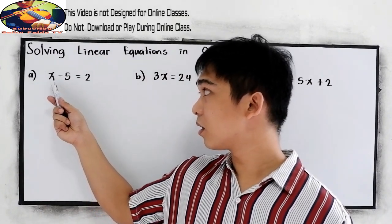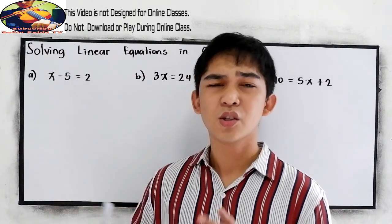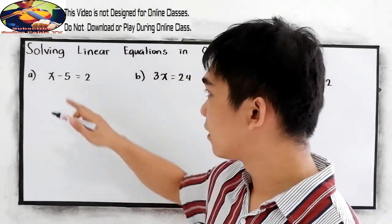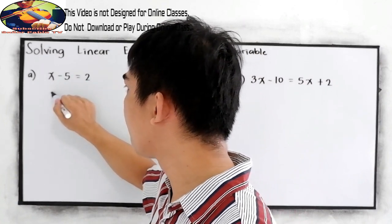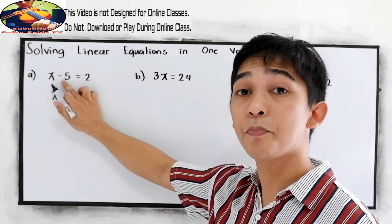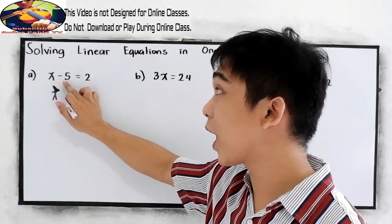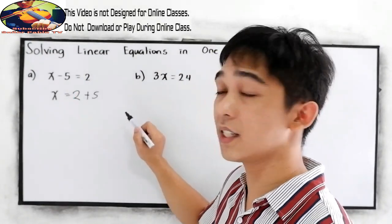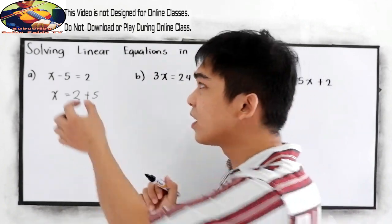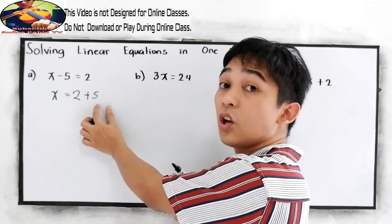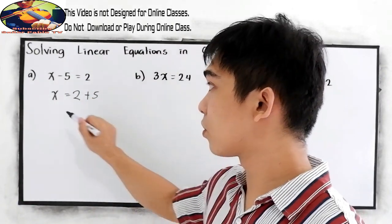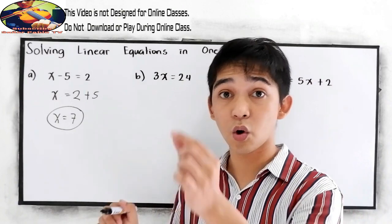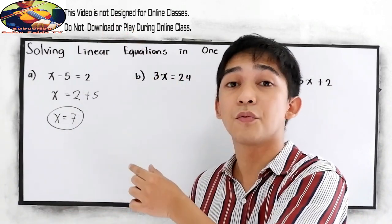First example, letter A: x minus 5 is equal to 2. We're going to find the value for x. If we use the addition property of equality, we add 5 on the left side and also plus 5 on the right side. The shortcut is to just move negative 5 to the right — don't forget to change the sign. So x is equal to 2 plus 5, which is 7. If you move a number from left to right, don't forget to change the sign.